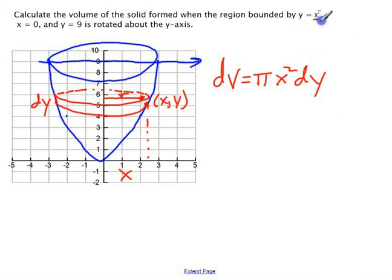So the volume of one disk is going to be pi x squared dy. And this worked out pretty simply because x squared is y, so I can just replace that x squared with a y. If it wasn't that simple, I would have to actually solve this equation for x in terms of y. So that's the volume of one disk.